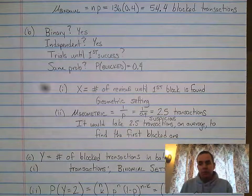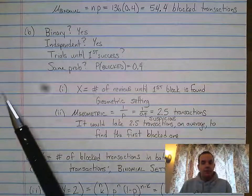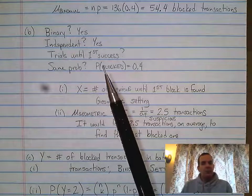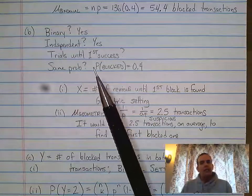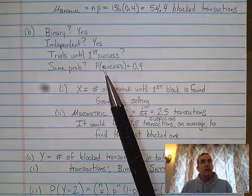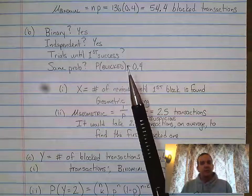Part B to question one for unit four progress check is a geometric setting. It asked a question about what would be the average number of trials you would need to get your first block transaction.